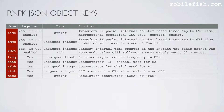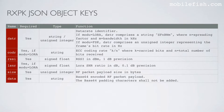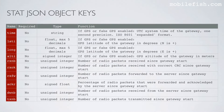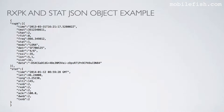Here are the received packet JSON object keys. I will not explain the function of these keys — a link to this presentation can be found in the description below. Here are the status JSON object keys, and here is a received packet and status JSON object example.